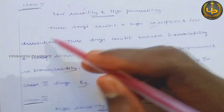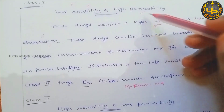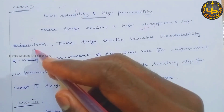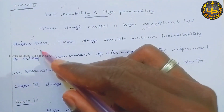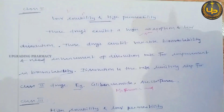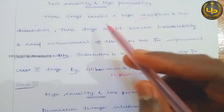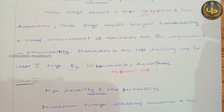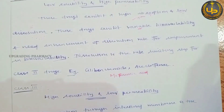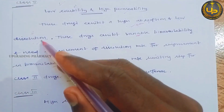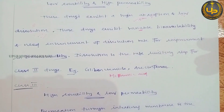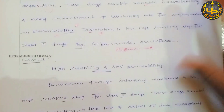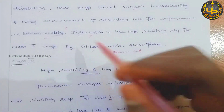Class 2 has low solubility and high permeability. Low solubility is due to a low dissolution rate, while high permeability is due to higher absorption. Lipophilic drugs are easily absorbed through the cell membrane but have a low dissolution rate in water. These drugs exhibit variable bioavailability due to variable dissolution rate, and dissolution is the rate-limiting step.